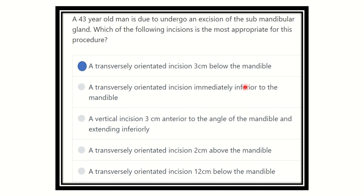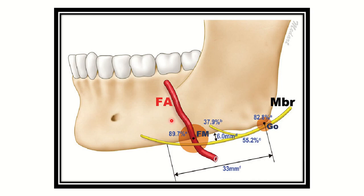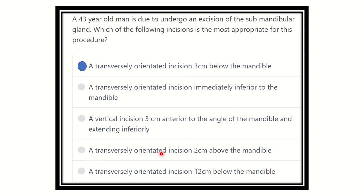Option B, a transversely oriented incision immediately inferior to the mandible, carries risk of injury to the marginal mandibular nerve. Option C, a vertical incision three centimeters anterior to the angle of the mandible, gives less exposure and also risks injury to nearby structures. Option D, two centimeters above the mandible, is not useful because there is only bone there and the submandibular gland cannot be exposed. Option E, 12 centimeters below the mandible, is too far away. Therefore our answer is option A: a transverse incision three centimeters below the mandible — this three centimeter measurement is very important.